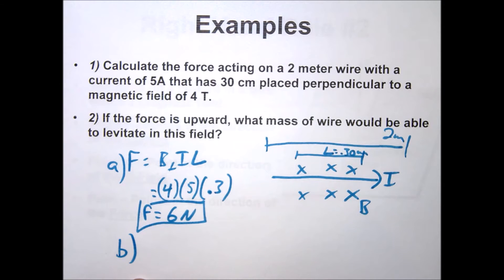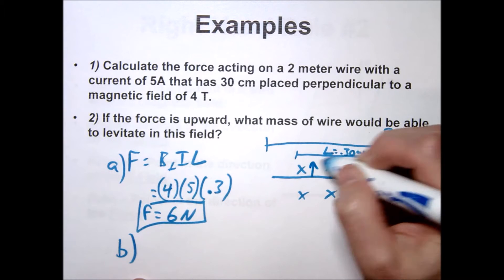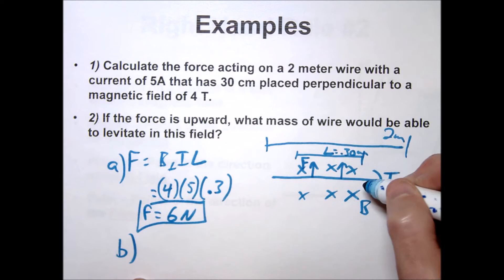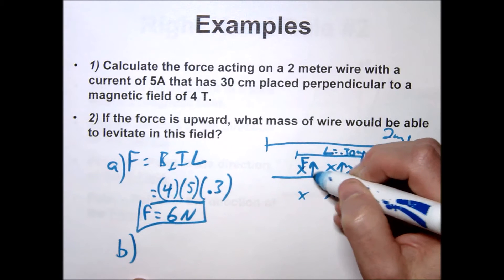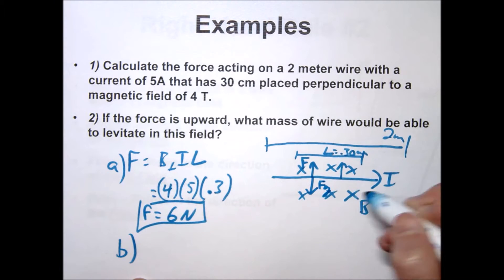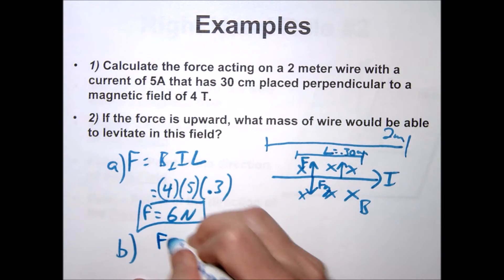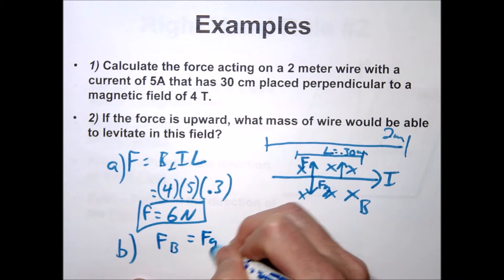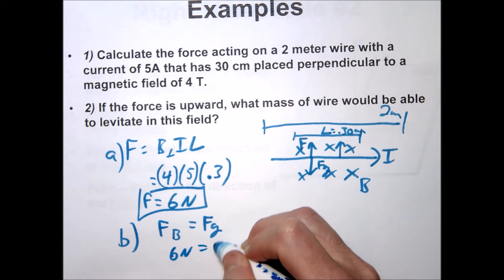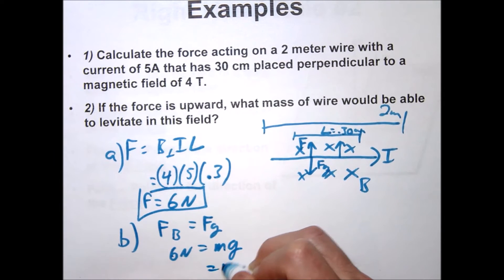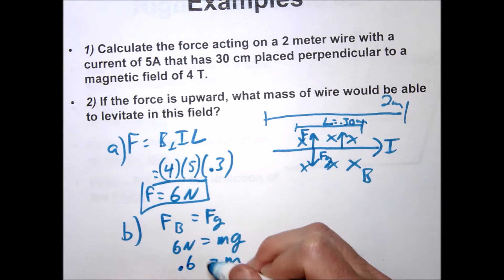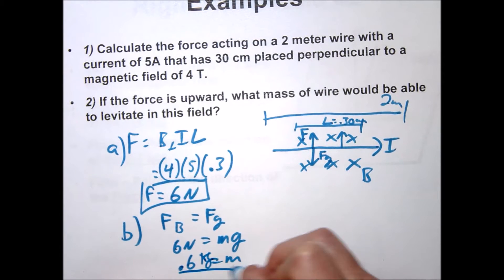For the next one: if the force is pushing up and gravity is pulling the wire back down, what if we want the wire to levitate? We simply set our magnetic force equal to our gravitational force: 6 N = mg. Dividing by 9.8 gives us roughly 0.61 kg — that's the mass at which levitation occurs.